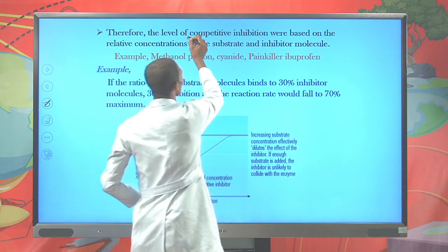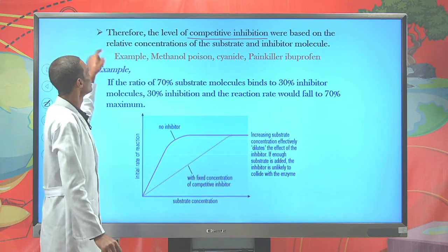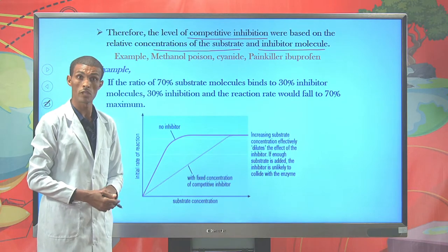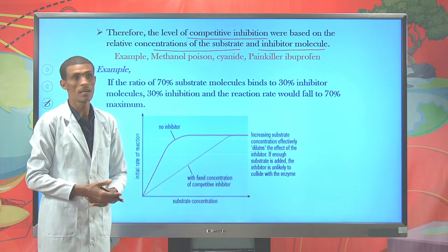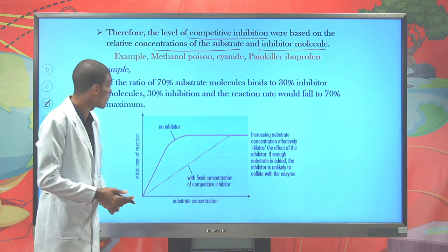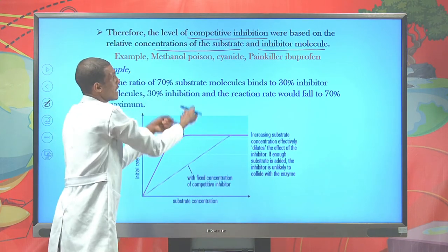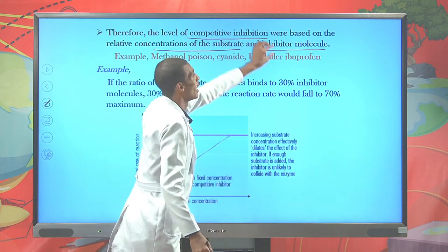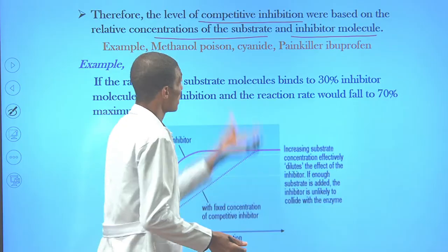Therefore, the level of inhibition by competitive reversible inhibitor is highly dependent on the relative concentration of substrate and inhibitor molecules. How much the rate of reaction proceeds depends on how much substrate concentration is present in the reaction and how much inhibitor molecule is present. The rate — whether fast or slow — is based on these two concentrations.